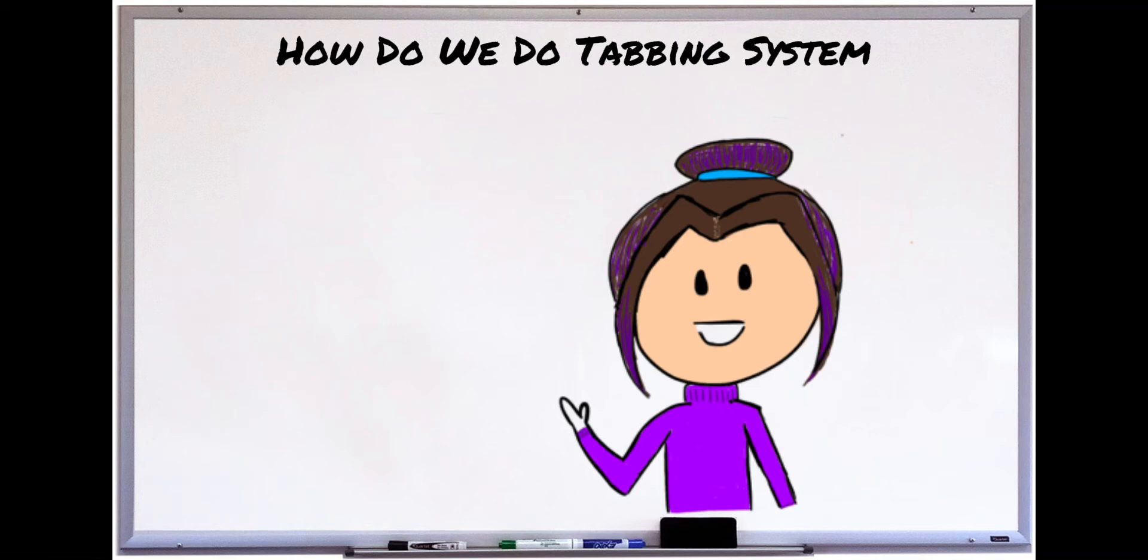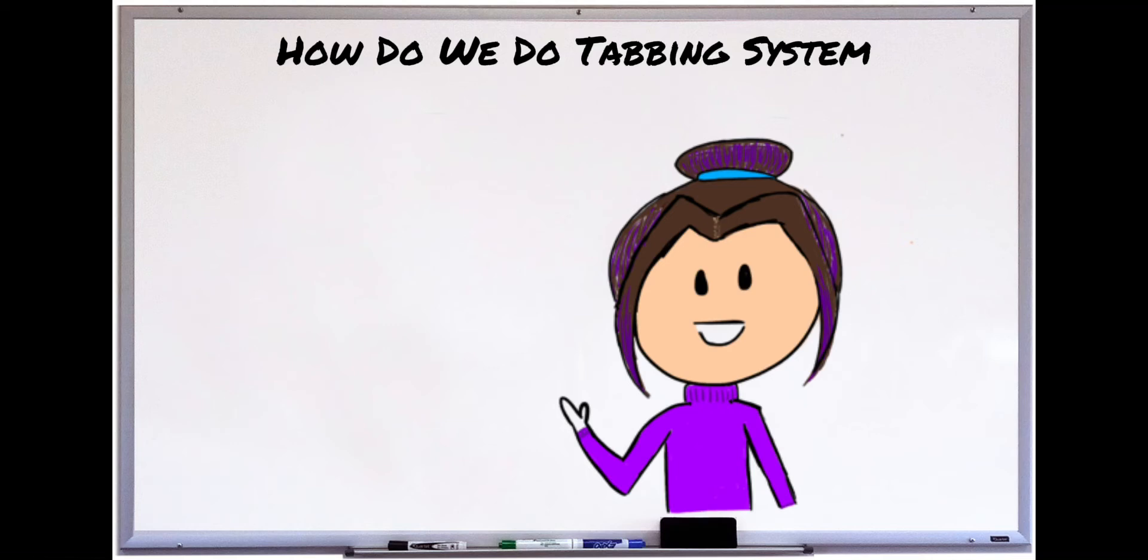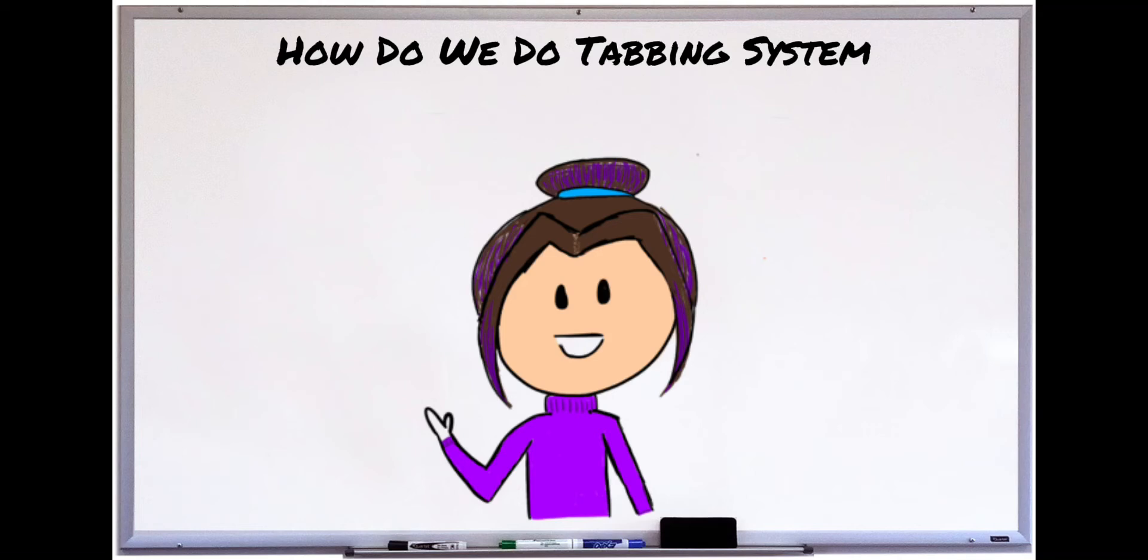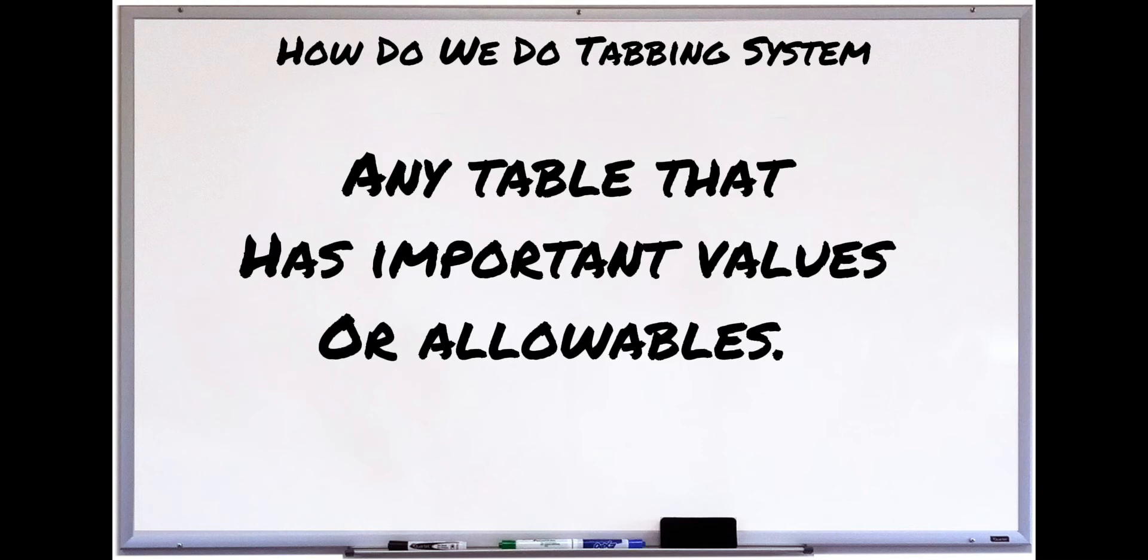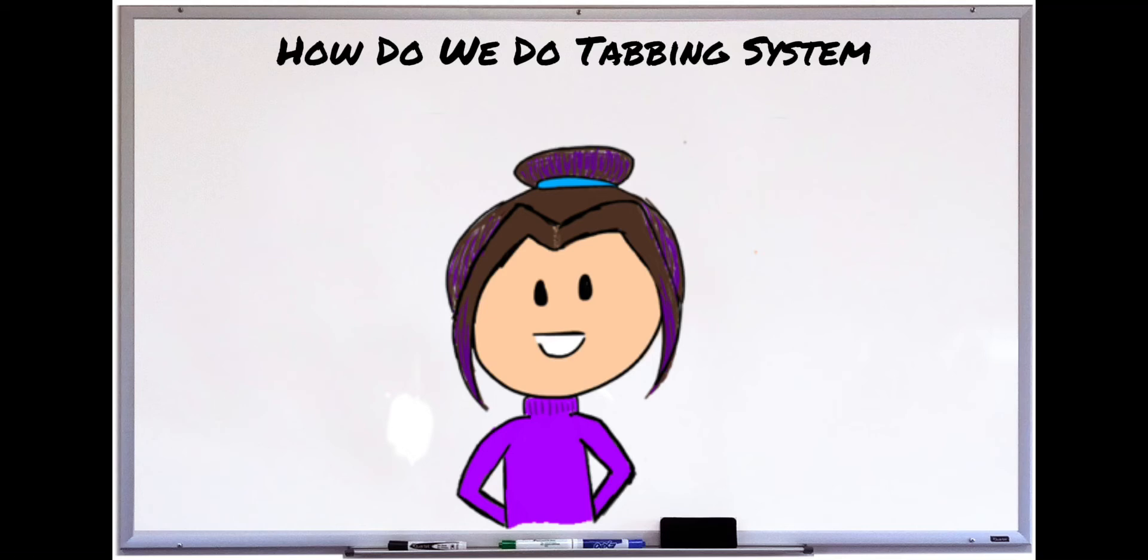Now let's talk specifically about the vertical end and each of the four letters. We have E, which stands for equation. Any equations that I find or deem important in this handbook, I will tab. The next most common tab I use, but not as common as E, is the letter T. T stands for any tables. It's very common in my Structures 2 handbook, like any allowable table that I need.